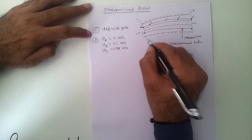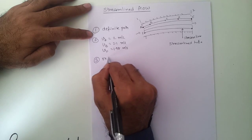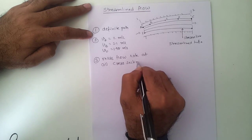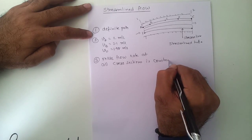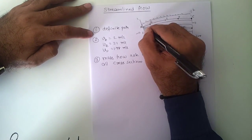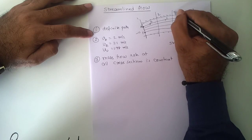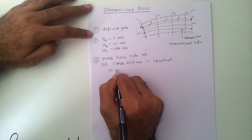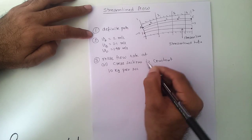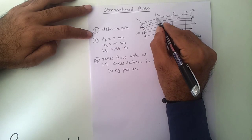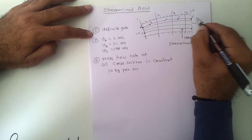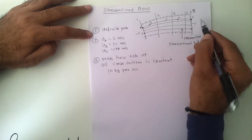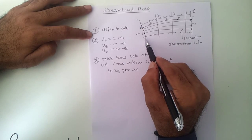The third feature is that the mass flow rate at all cross sections is constant. Let us say we have cross sections 1, 2, 3, 4, and 5. If 10 kg of liquid enters at cross section 1 in one second, then 10 kg will also pass through cross sections 2, 3, and 4, and finally 10 kg will leave at cross section 5 per second.